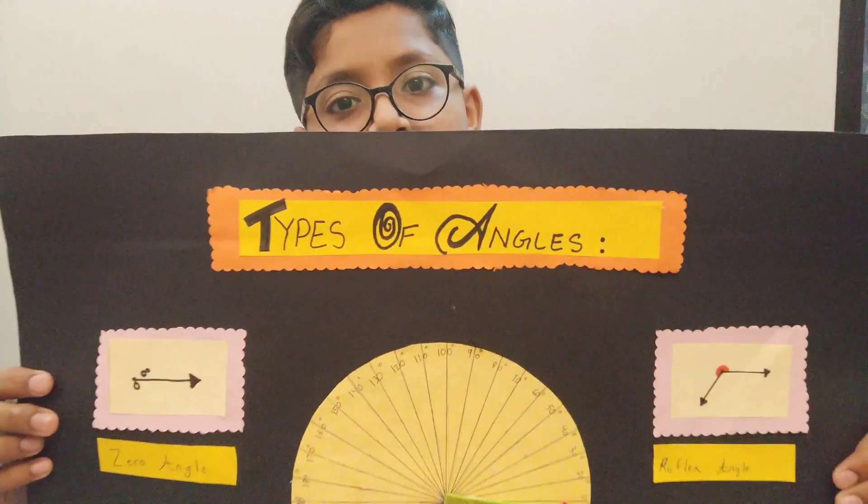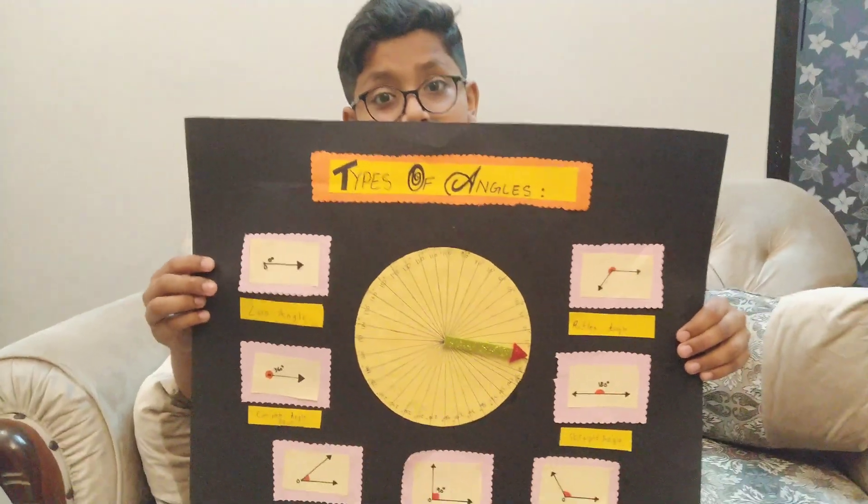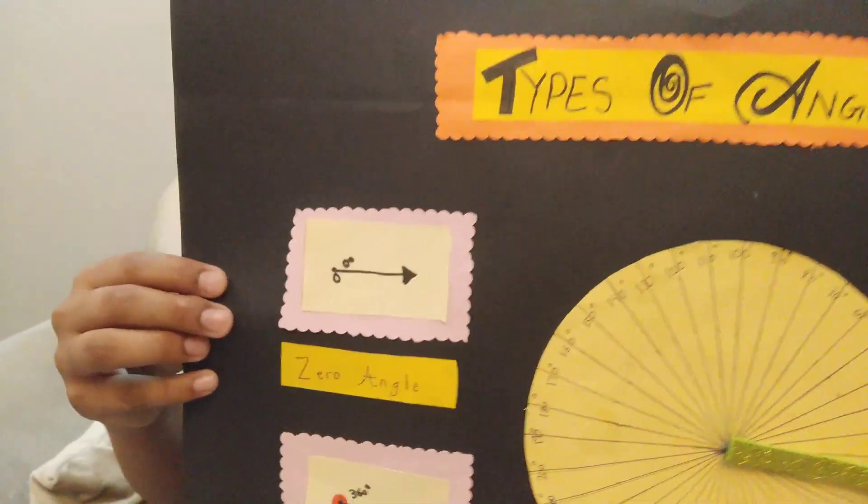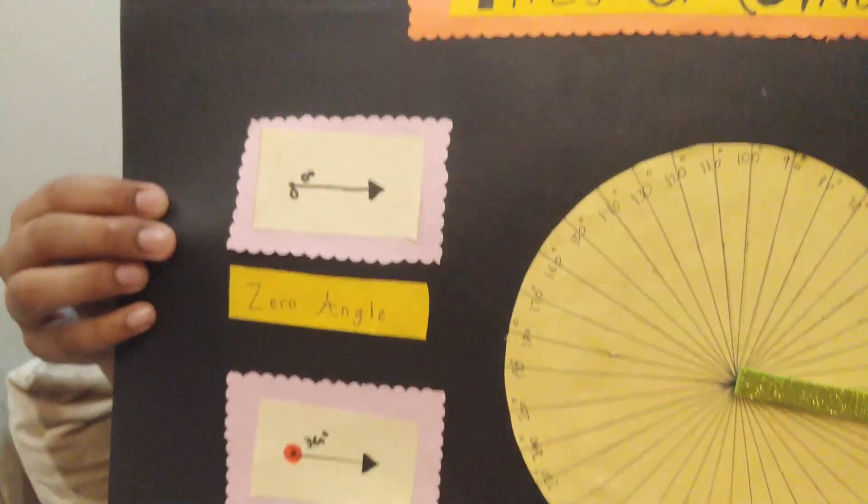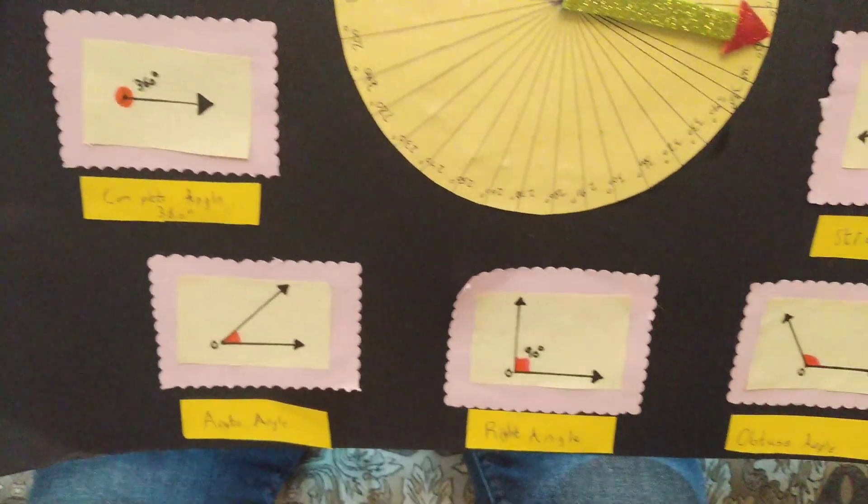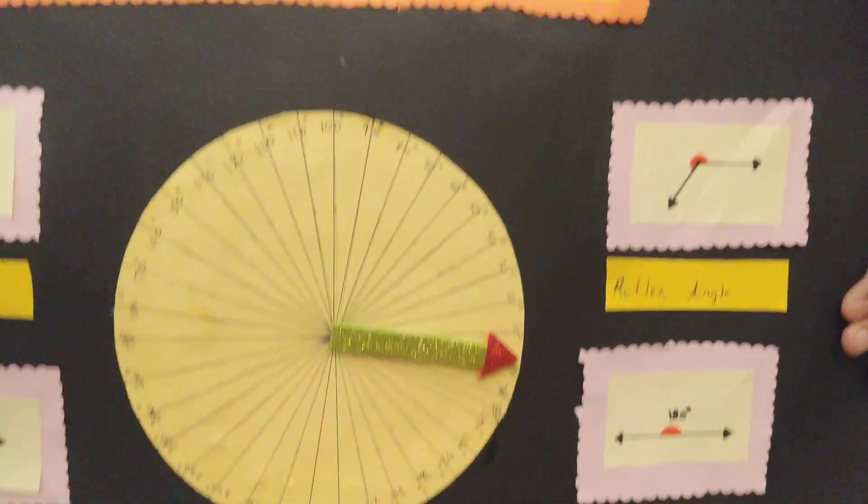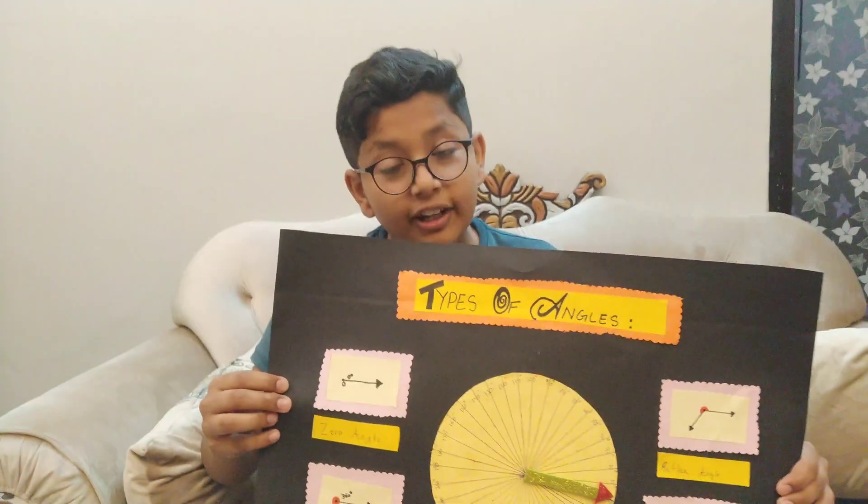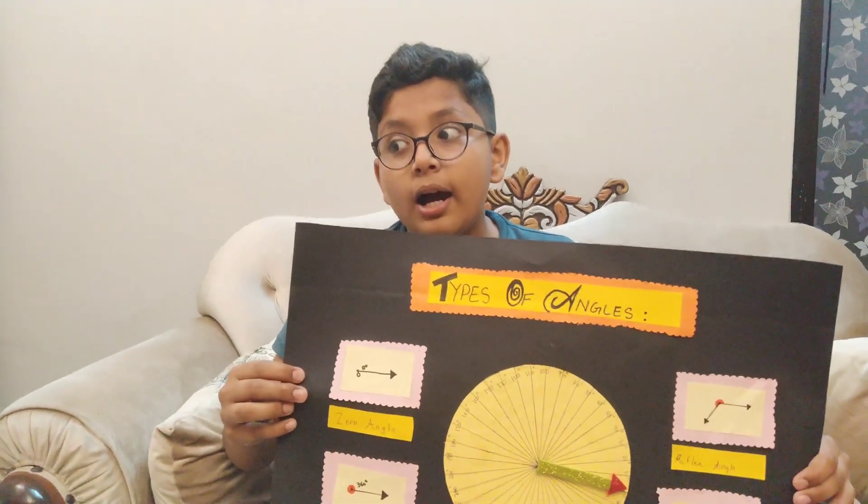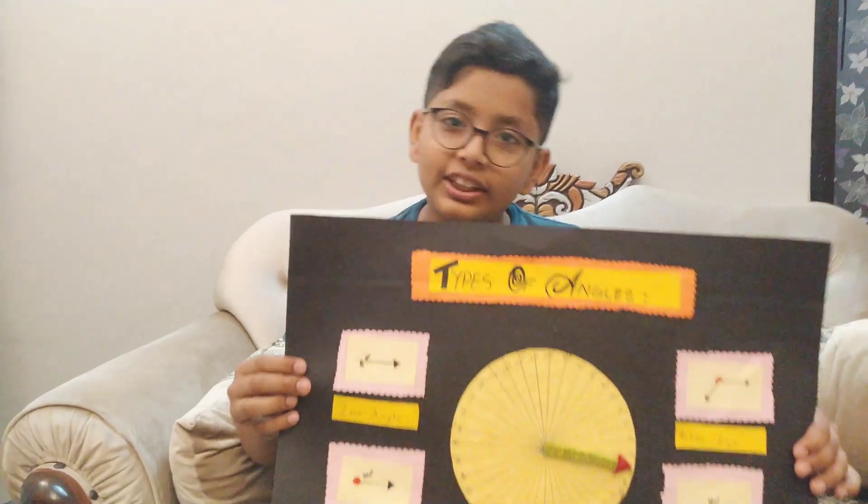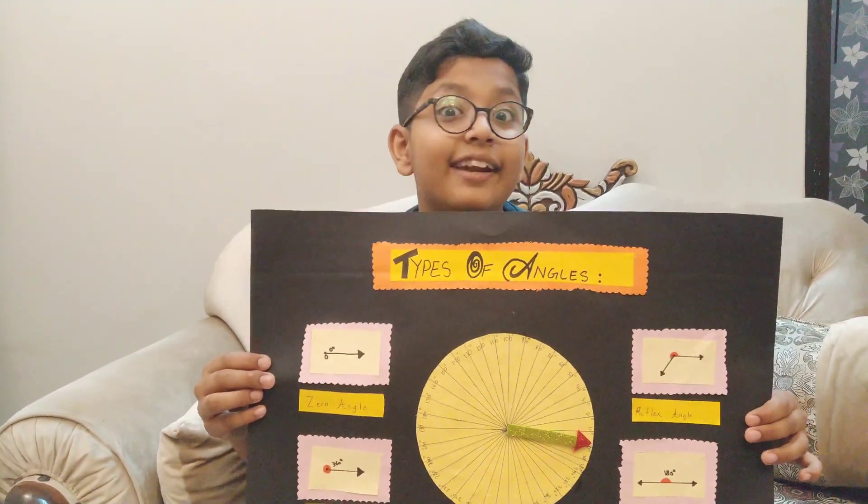So guys, now it's time to reveal our working model. As you can see there are many angles on the side and on the right and on the left and on the bottom. So I will tell you the names: right angle, zero angle, complete angle, obtuse angle, reflex angle, and acute angle. So these are all the angles, and straight angle. I forgot one.